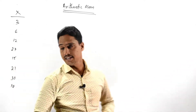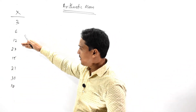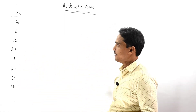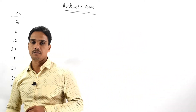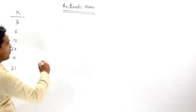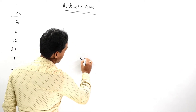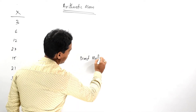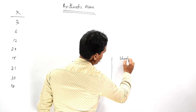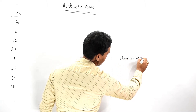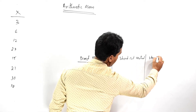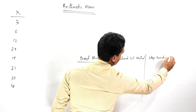Our given series is 3, 6, 12, 27, 15, 21, 30, and 18. In this series, we should find out the arithmetic mean under different methods — that means under the direct method, the shortcut method, and the step deviation method.